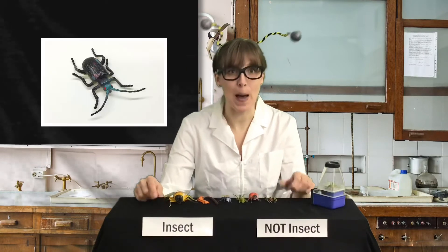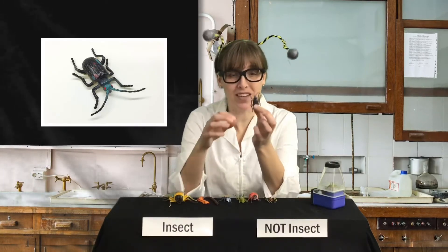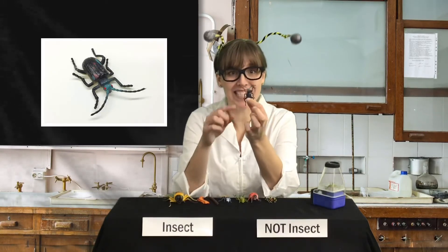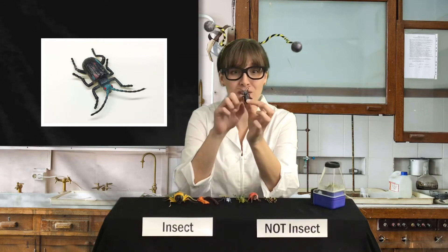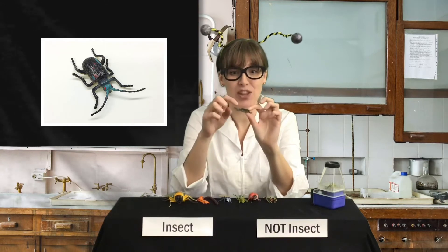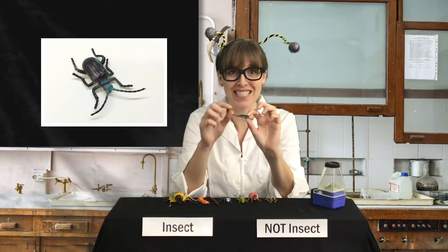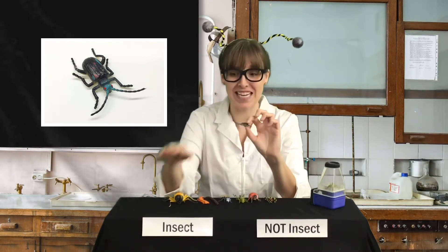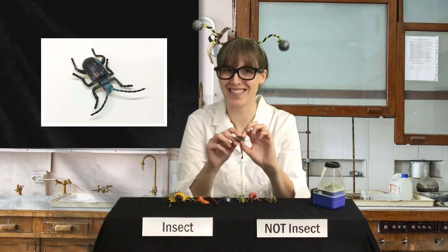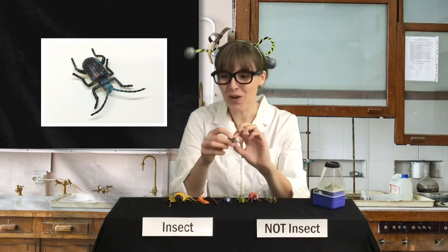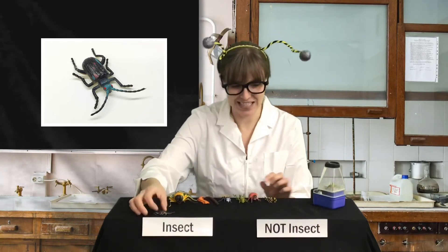Let's start with a beetle. A beetle has six legs — one, two, three, four, five, six legs — three body parts, and antennas. Is that an insect or not an insect? You're right. That's an insect.